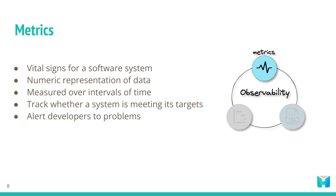The third type of data we look at is metrics. Metrics are like vital signs for a software system — they are a numeric representation of data measured over intervals of time. They help developers understand the health of a system. By setting performance goals and baselines, metrics allow developers to track whether a system is meeting its targets and catch problems before they become critical.